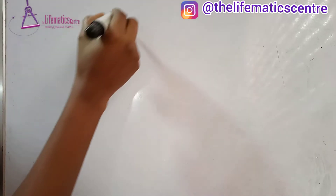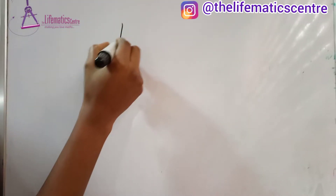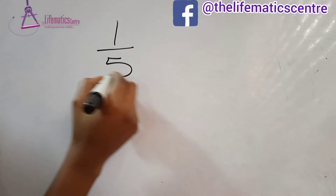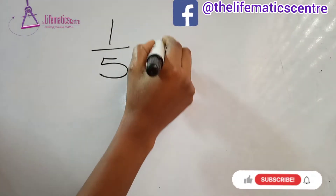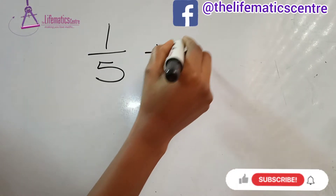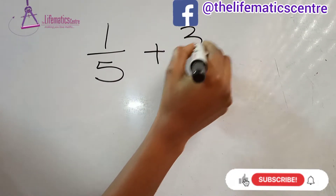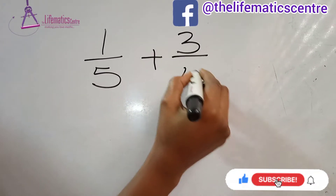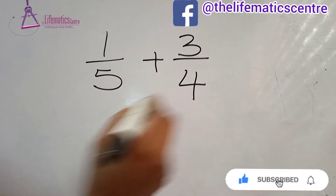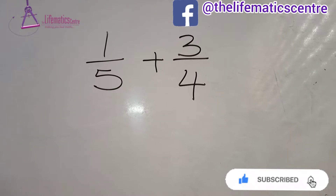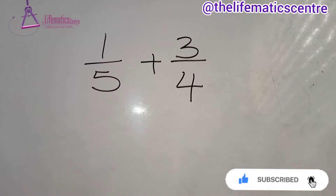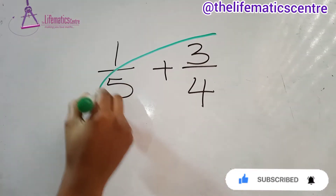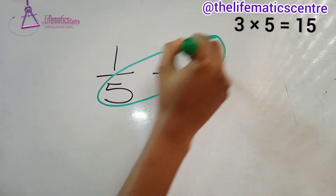One way to add up your fractions is using the butterfly method. A key advantage of the butterfly method is that it helps you eliminate calculating the LCM separately. So let's multiply diagonally.